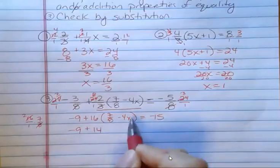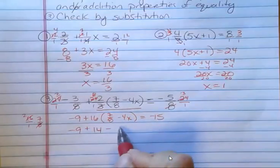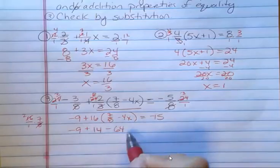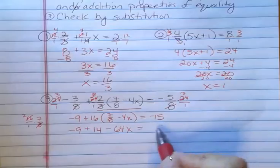16 times 4. I always get that one wrong. 64. I always want to say 48, which is times 3. And then over here, I have negative 15.